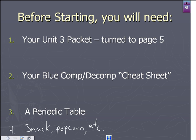So before we get started, we need to get a couple things together. First one is your unit 3 packet turned to page 5, which is our composition reactions. Second thing you need is your blue composition decomposition cheat sheet. You guys receive that during class. And the last thing you need is your periodic table. You're going to jot a few notes down on that. Number 4 down here is optional. If you want, that's the benefit of being at home doing this, I guess. You can relax and grab a snack if you want.